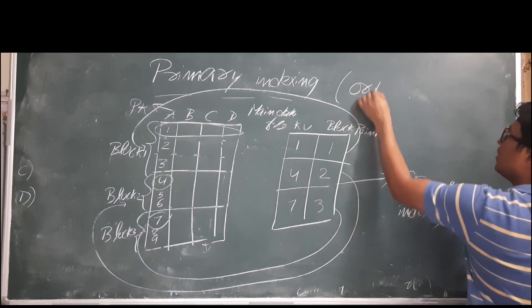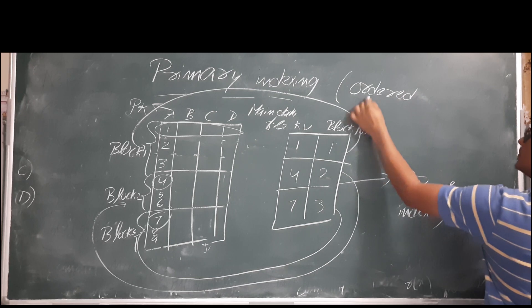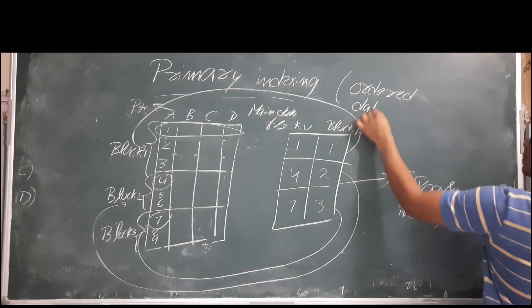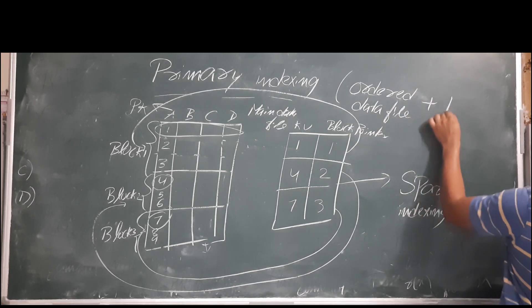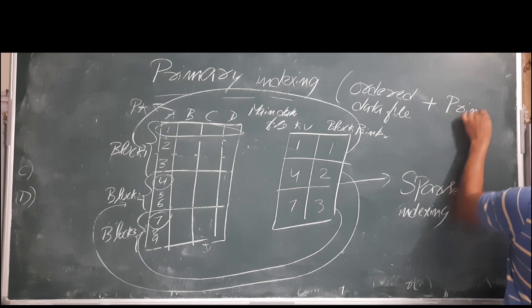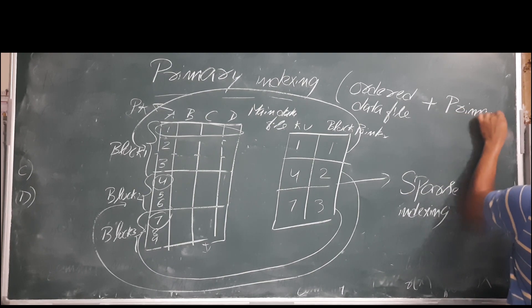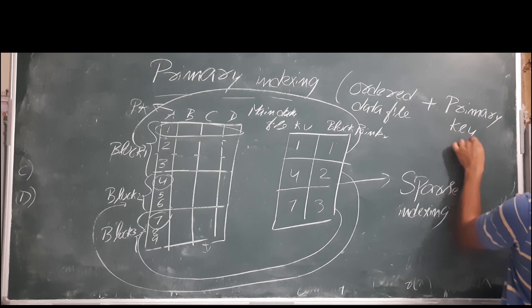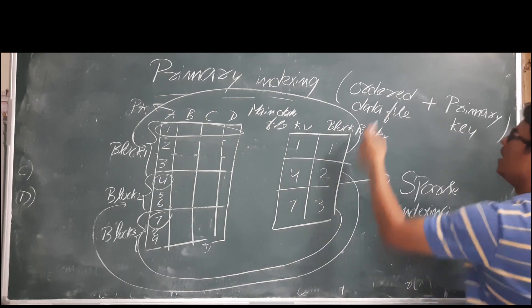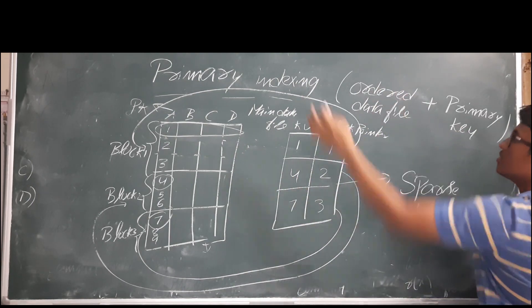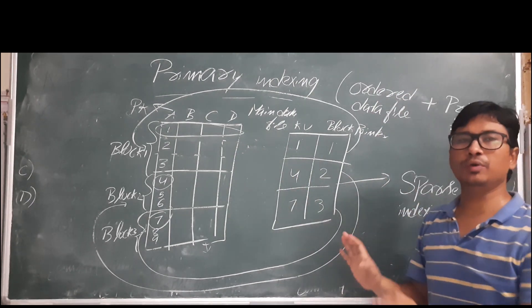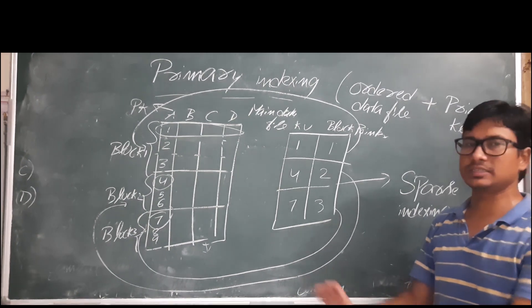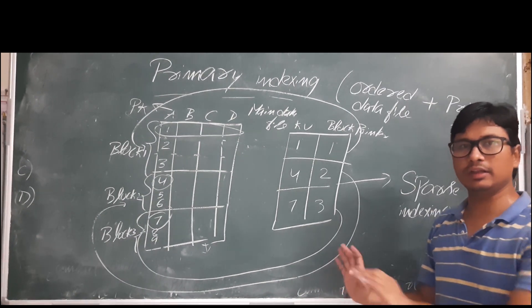In short, primary indexing equals an ordered data file plus indexing on the primary key, meaning the indexing is done on the primary key of the main file and the file is also in order. I hope you have understood what is primary indexing and all the related concepts. Thank you so much.